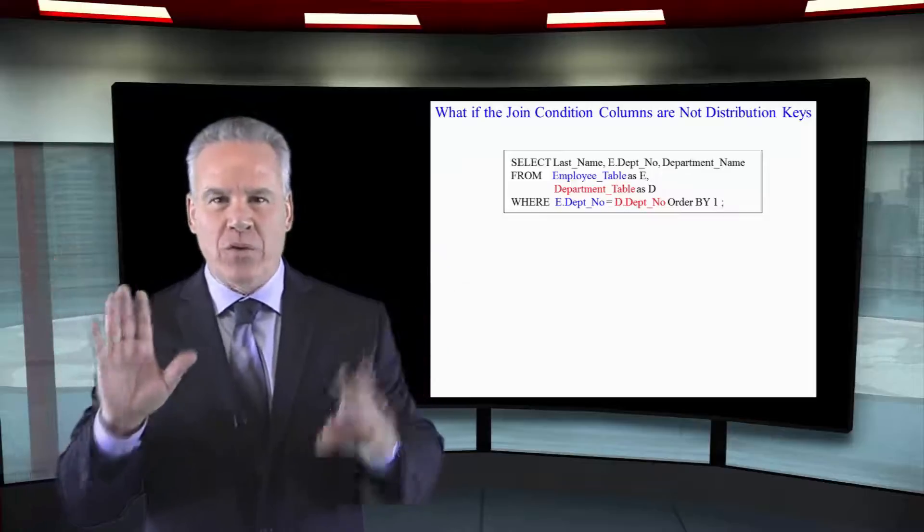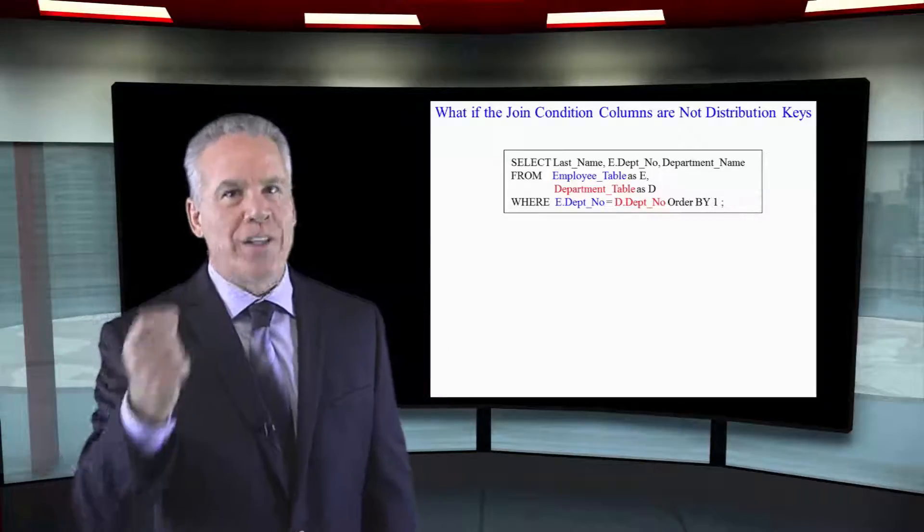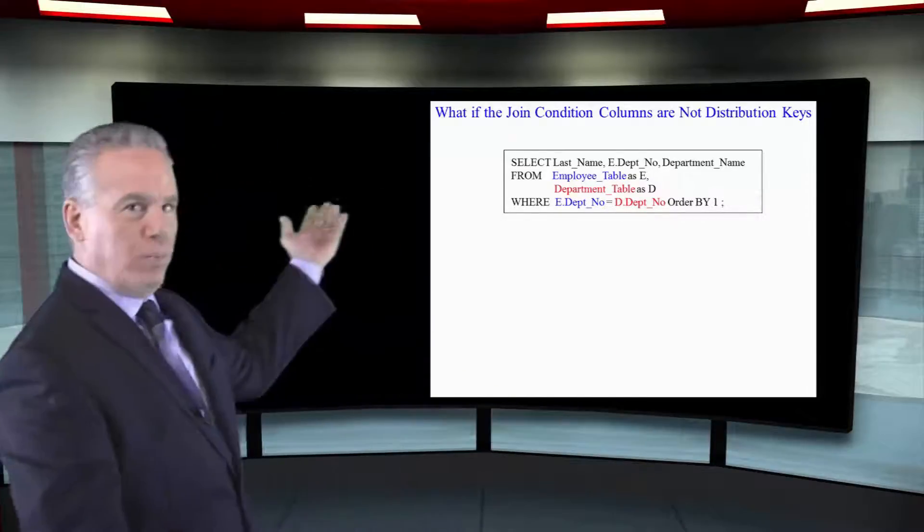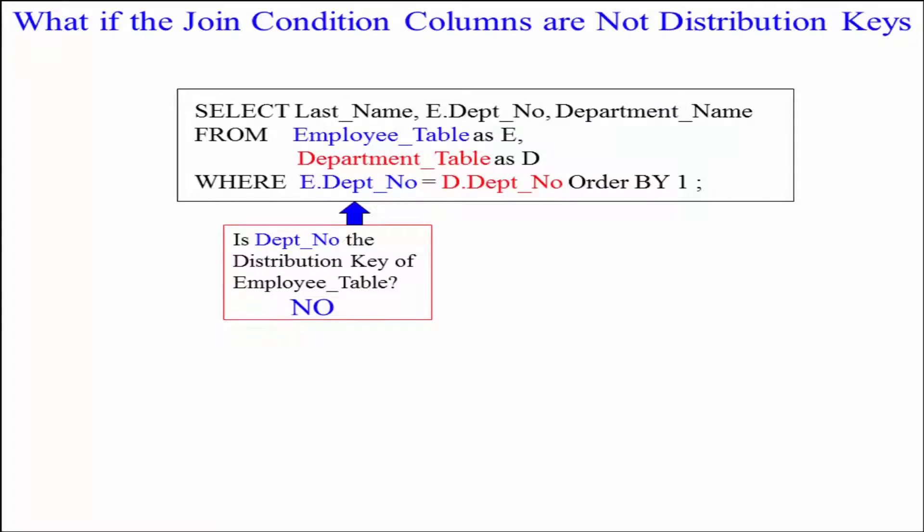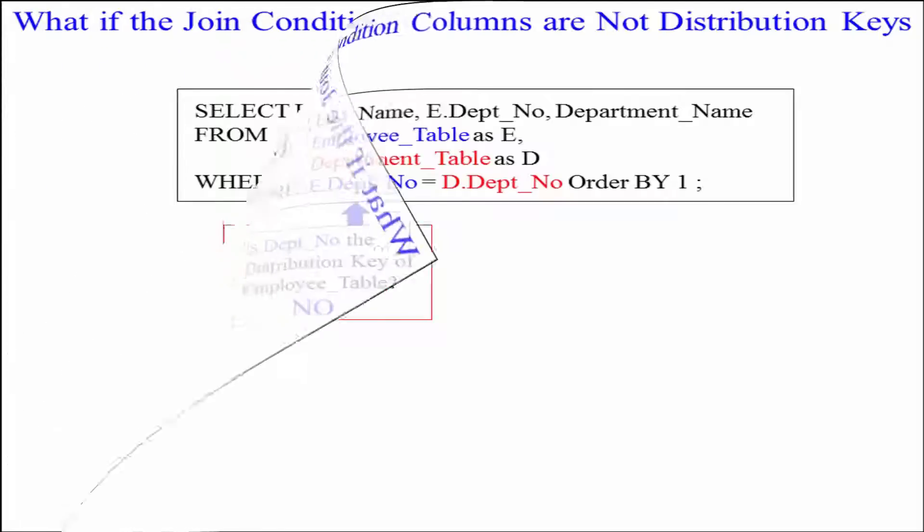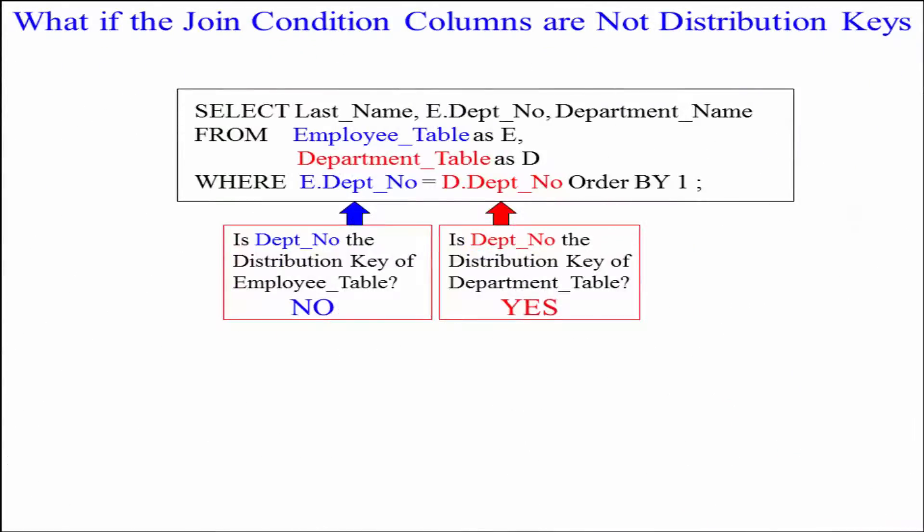I've changed things around for you so you'll see really what usually ends up happening. We've got our employee table. Its distribution key was employee number. Now we've got our department table. Its distribution key is department number Depno.